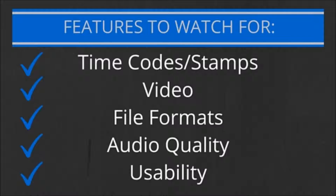Let's get started with the list. The first thing I have for you is a list of features to watch for — different features that may or may not be included within the software. First is time codes or timestamps. Second is whether or not it also supports video along with audio. Third is file formats. Next is audio quality, because some programs compress the audio before playing it. Lastly is usability, because some just frankly work better than others.